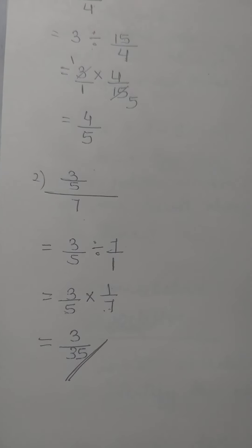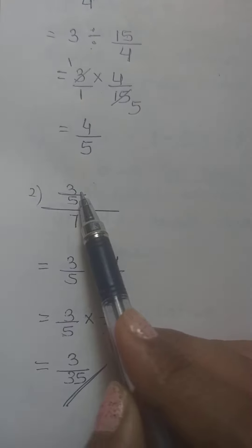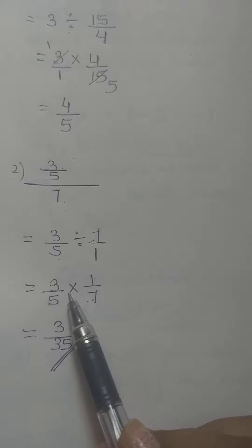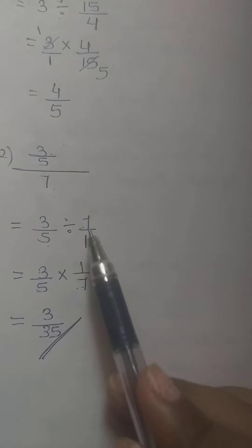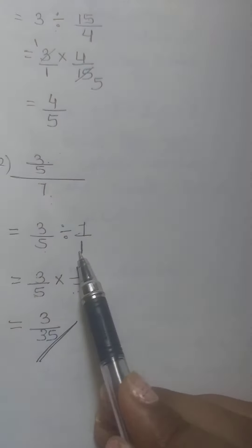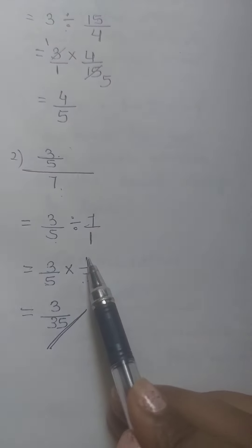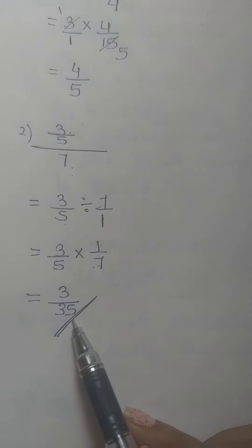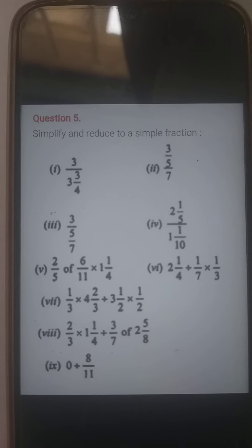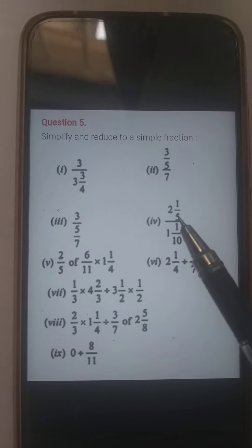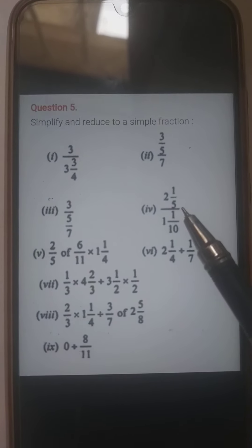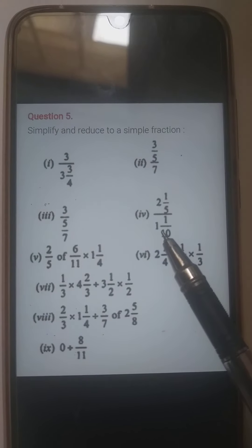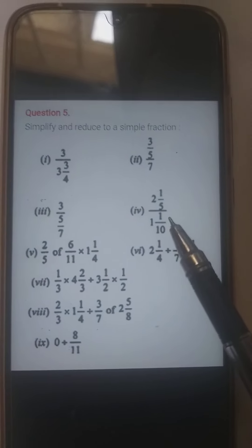Okay students. It is very simple: numerator divided by denominator. Division changes into multiplicative inverse, so find the reciprocal of the number. 7 by 1 becomes 1 by 7. Then multiply numerator to numerator and denominator to denominator. Now the next question: Question number 4. The numerator is 2⅕ — a mixed fraction — and the denominator is 1 1/10 — also a mixed fraction.